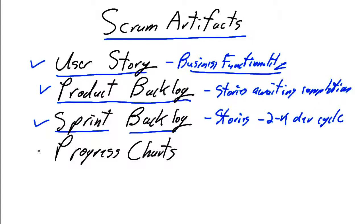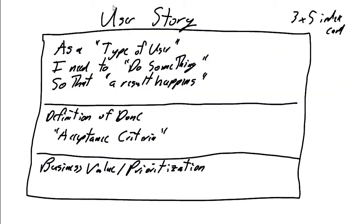And finally, we track our progress in Scrum development through a series of progress charts. The key artifact is the user story, which, as just mentioned, identifies the business functionality.